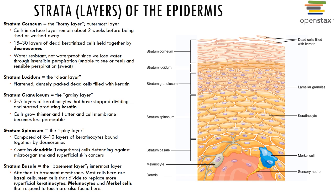The stratum lucidum is the clear layer found only on the palms of the hands or the soles of the feet. It is a clear band several layers thick with keratin granules adhered to collagen fibers. There are no nuclei or organelles, so it is basically a few rows of flat, dead keratin cells.